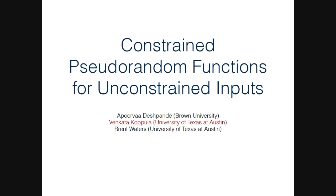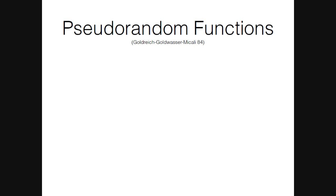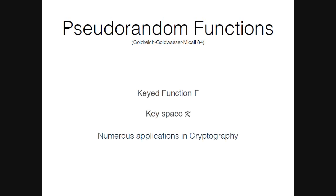So we all know what pseudorandom functions are. A pseudorandom function is a keyed function f with a key space k, and the function evaluations look like uniformly random strings. This has numerous applications in cryptography and it's one of the central building blocks.